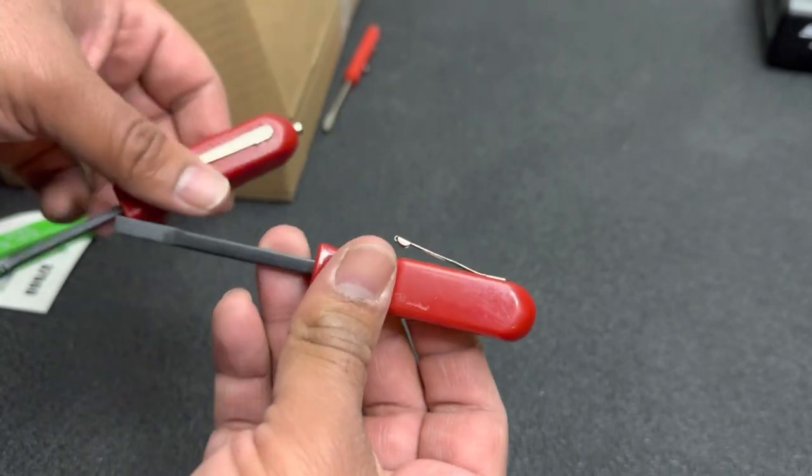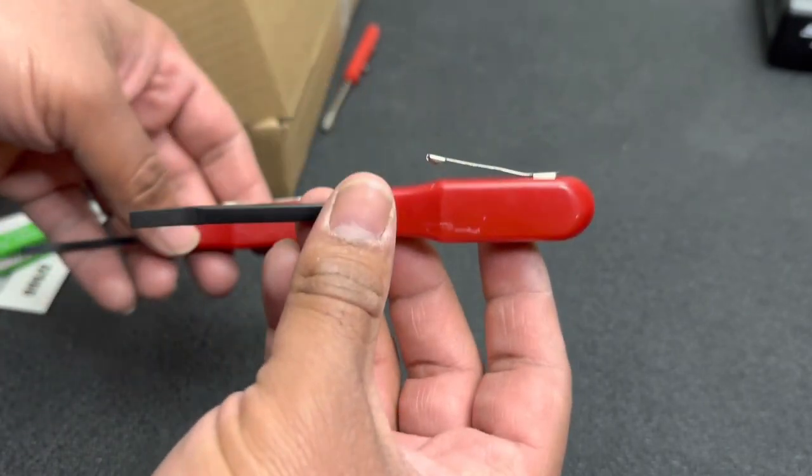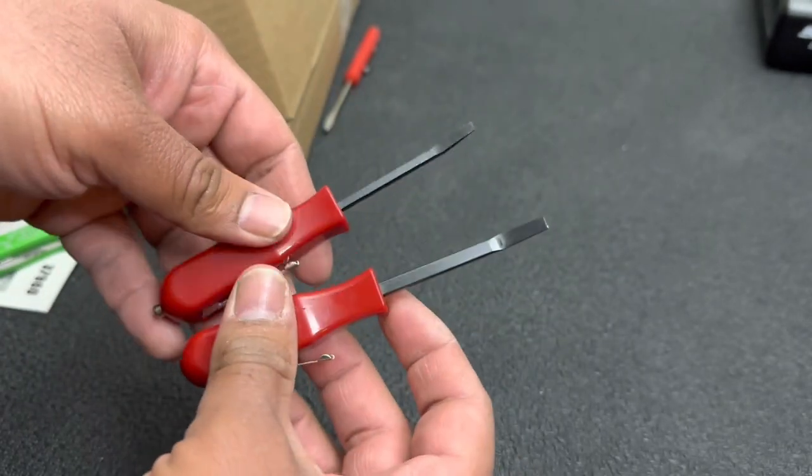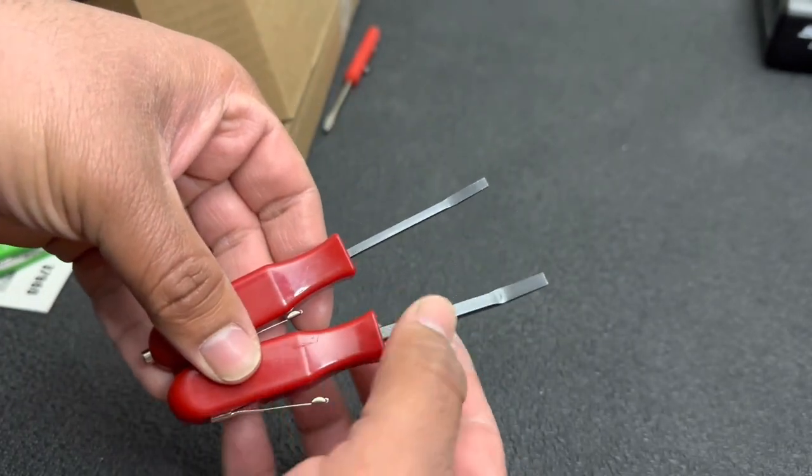They both come with pocket clips. I kind of bent the pocket clip on that one getting it out of the package, but that's completely my fault. But, I like that these have a square shank on them.